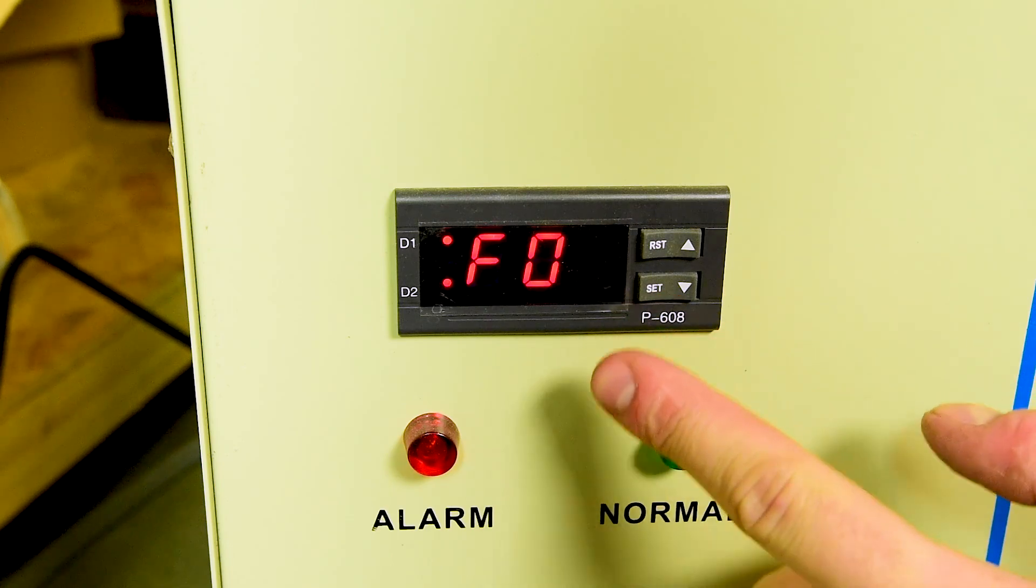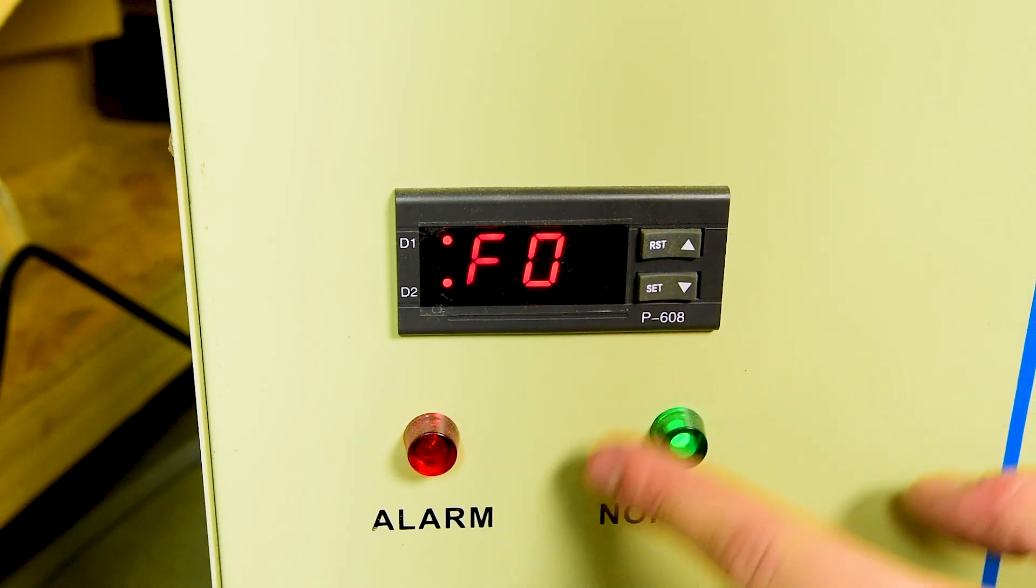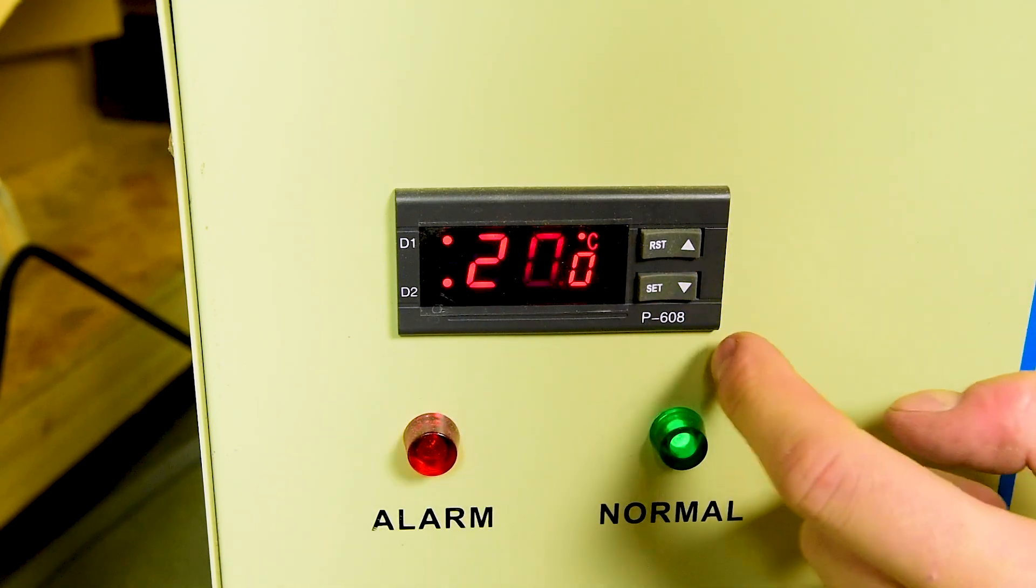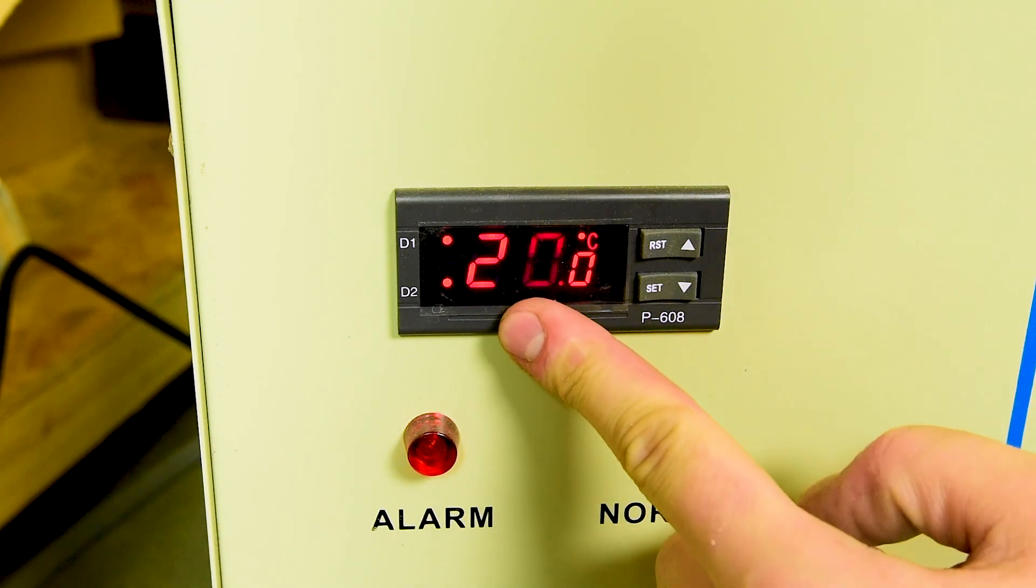F zero is what temperature we want it to be set to but if you want it set lower than 20 degrees you're first going to have to go down to function nine and we're going to change that one because it will not go lower than this. This is your lowest temperature allowed.